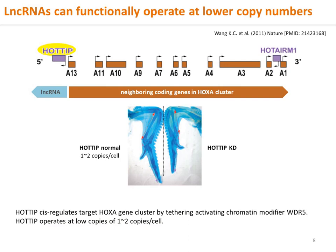lncRNAs being expressed at low levels does not mean they are useless. To the contrary, even lncRNAs expressed at low levels should not be dismissed outright. lncRNAs can in fact function at as few as a couple copies per cell. For example, a newly transcribed nascent lncRNA can be tethered to the target gene promoter site and recruit chromatin modifiers to change the local chromatin active state. The lncRNA HOTTIP functions at about 1 to 2 copies per cell, and in its complete absence, limb morphology is deformed.